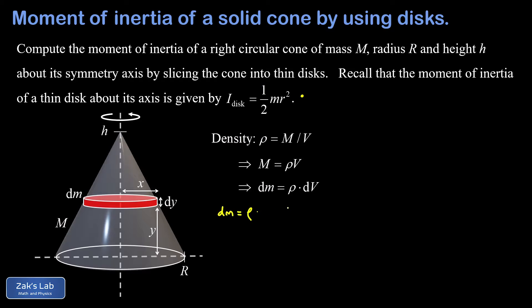dm equals density times the incremental volume dV. As a thin disk, the volume is just the area of a circular face multiplied by the thickness, so dV equals pi·x² times dy. Therefore dm equals rho·pi·x²·dy.